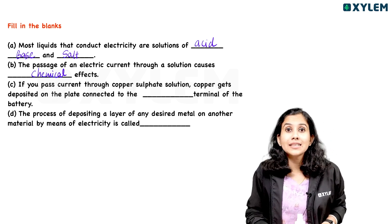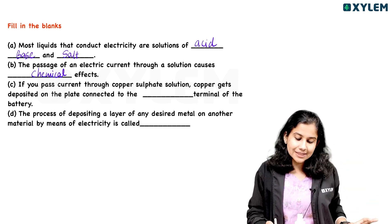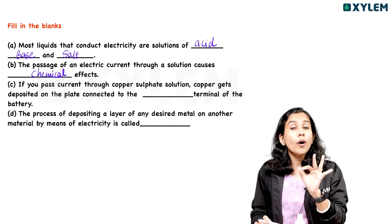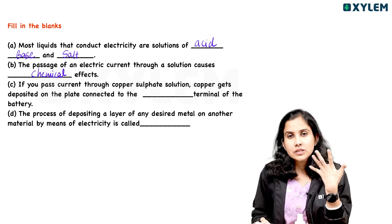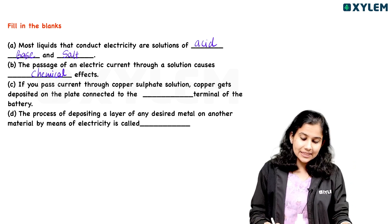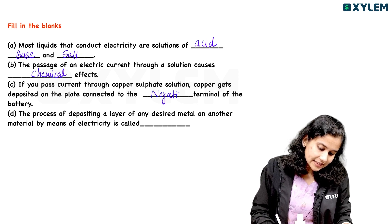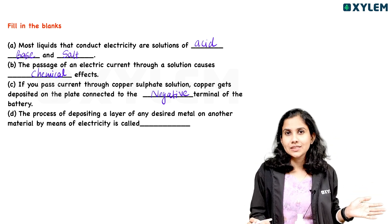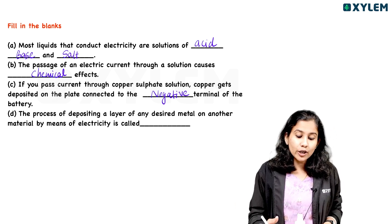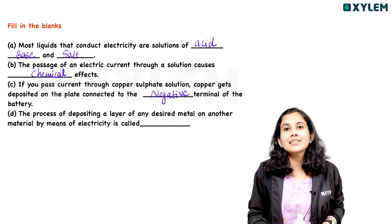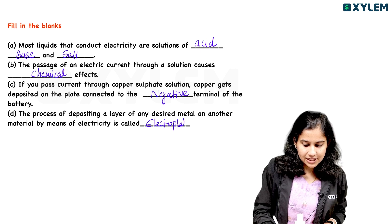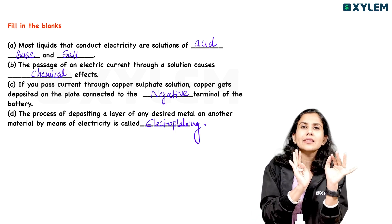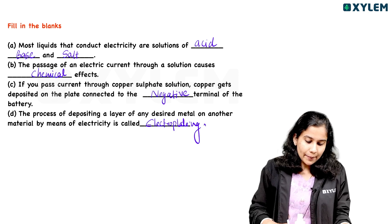If you pass current through copper sulfate solution, copper gets deposited on the plate connected to the negative terminal of the battery. That is a very important question. The process of depositing a layer of any desired metal on another material by means of electricity is called electroplating. Electricity is used to apply a metal coating to another object's surface — that is electroplating.